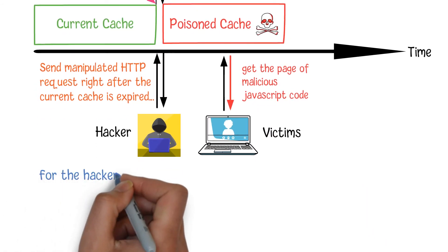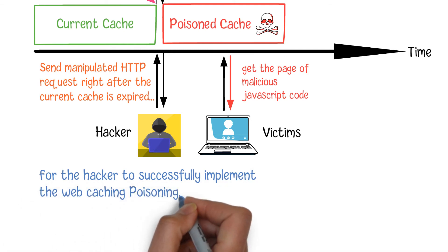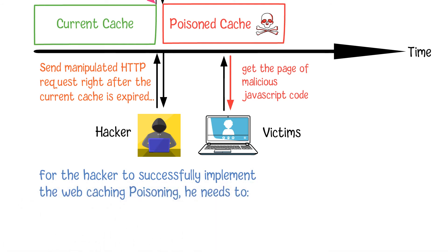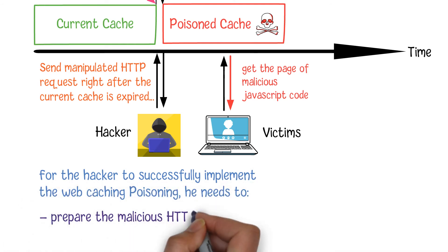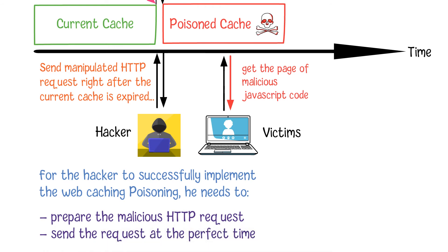For the hacker to successfully implement web cache poisoning, he needs to prepare the malicious HTTP request and send the request at the perfect time.